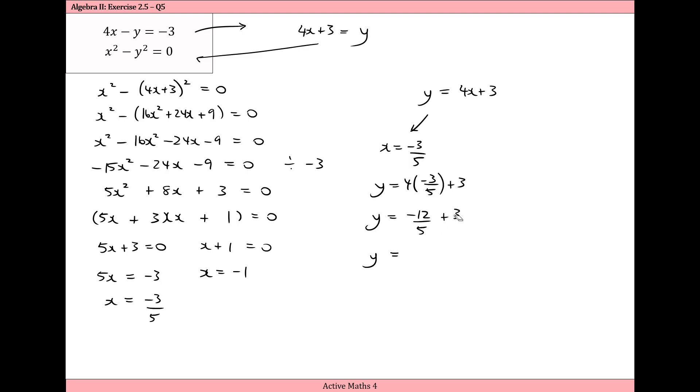3 is actually 15 over 5. So minus 12 plus 15 is 3. And that's over 5. So our answer when x equals minus 3 fifths, y is equal to plus 3 fifths. And that's one set of solutions.